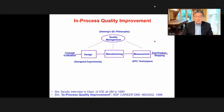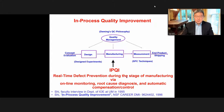What I think is missing is what happens during the manufacturing process. Robust design cannot anticipate all disturbances. Statistical process control and sampling mean the product is already made if defects occurred. Management focuses on human aspects, not necessarily the system. So we should focus on in-process quality improvements with sensing and automation capabilities during manufacturing — real-time defect prevention. IPQI should focus on online monitoring, root cause diagnosis, and automatic compensation control.